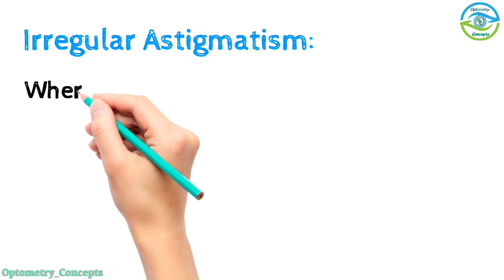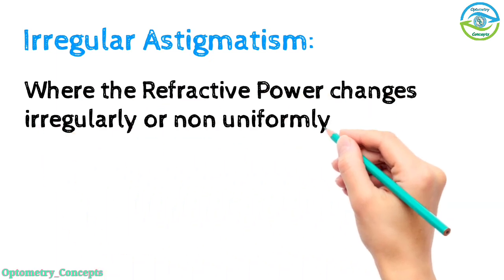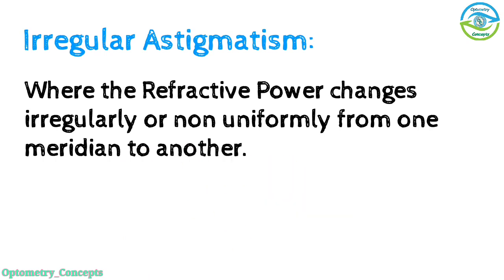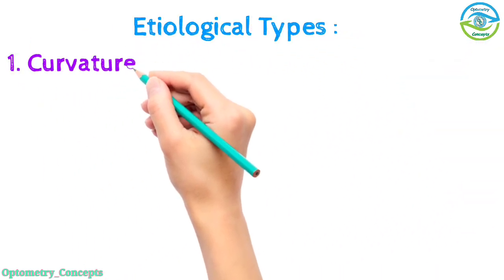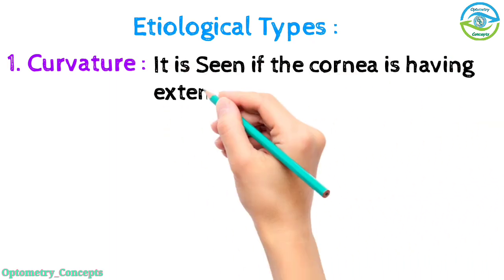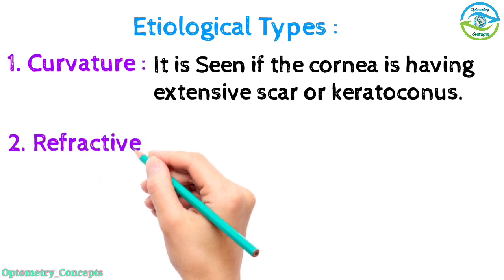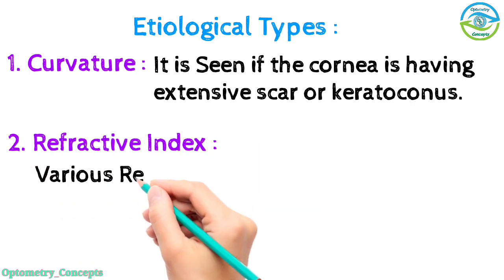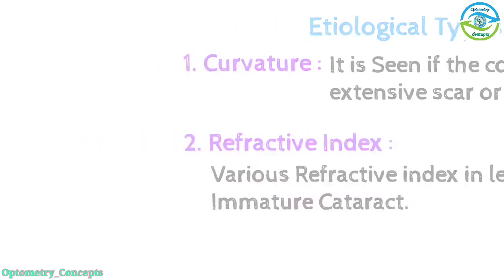Irregular astigmatism is where the refractive power changes irregularly or non-uniformly from one meridian to another. Etiological types: curvature - it is seen if the cornea has extensive scar or keratoconus. Refractive index - various refractive index in lens, immature cataract.